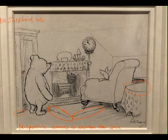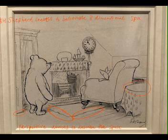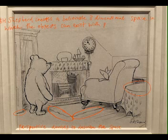First of all, perspectival lines on the floor and the ellipse on the half of the table on the right hand side there help to describe the plane. Shepard created a believable and three-dimensional space in which these objects can exist with perspectival devices.